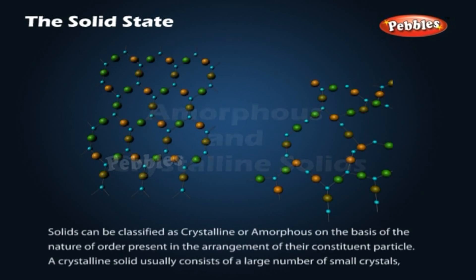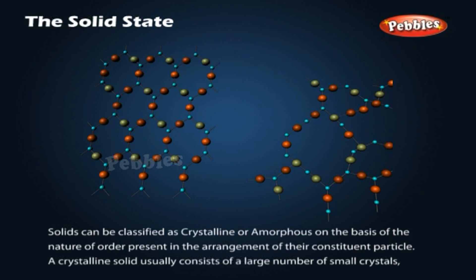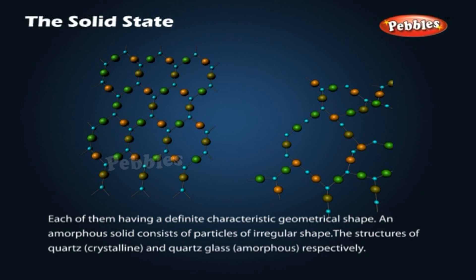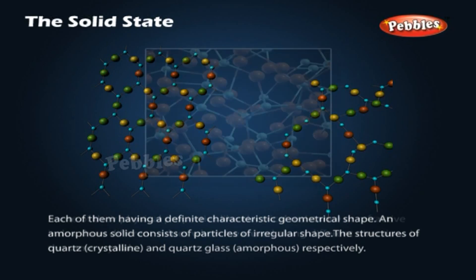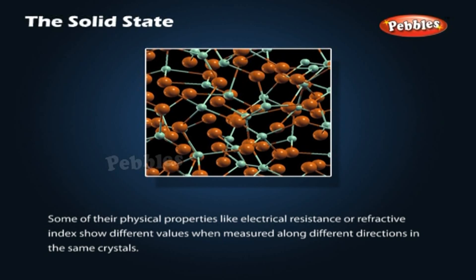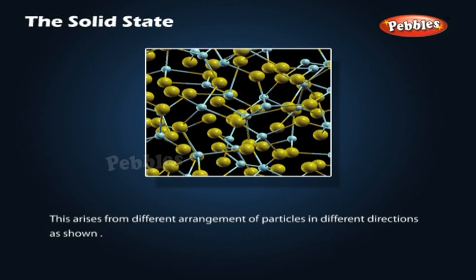Amorphous and crystalline solids. Solids can be classified as crystalline or amorphous on the basis of the nature of order present in the arrangement of their constituent particles. A crystalline solid usually consists of a large number of small crystals, each having a definite characteristic geometrical shape. An amorphous solid consists of particles of irregular shape. The structures of quartz (crystalline) and glass (amorphous) are shown respectively. Some physical properties like electrical resistance or refractive index show different values when measured along different directions in the same crystal.